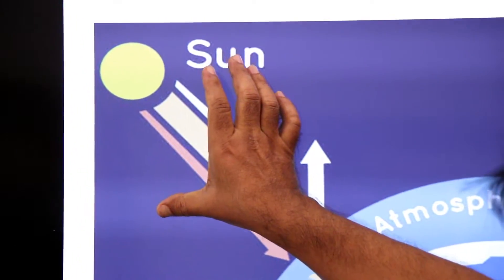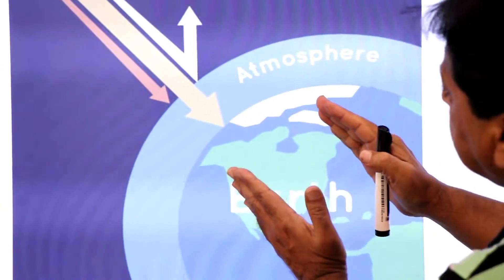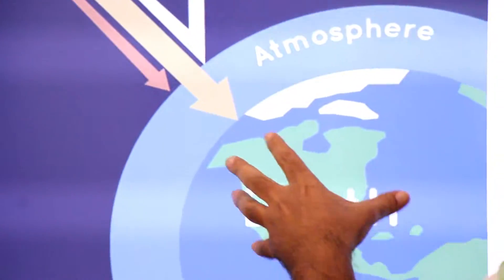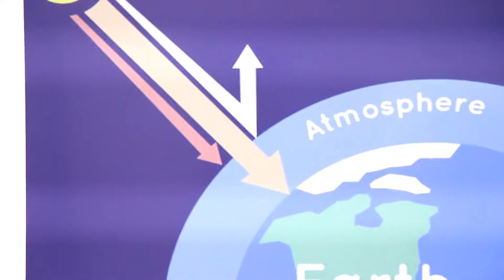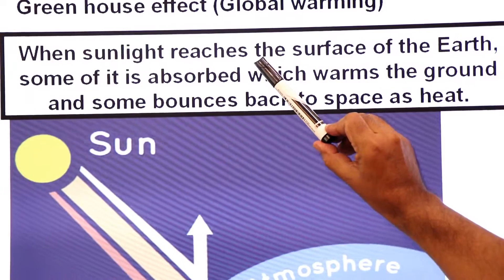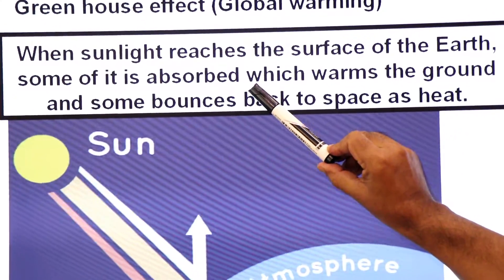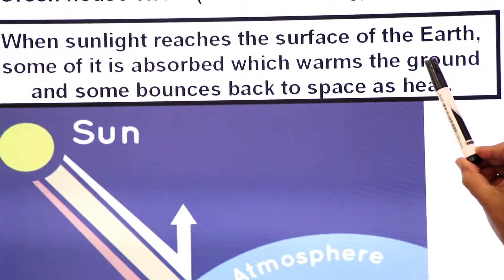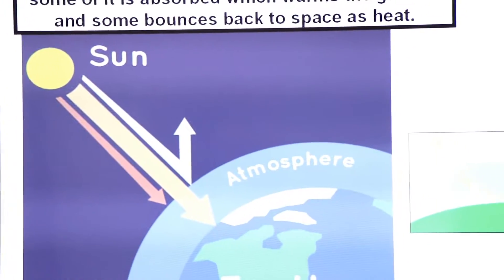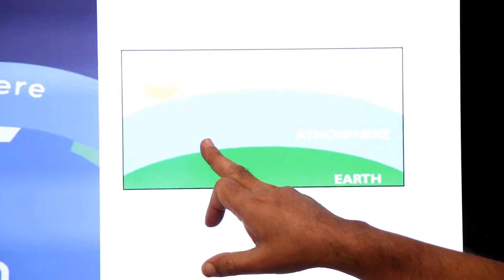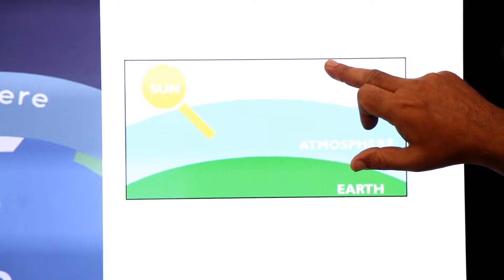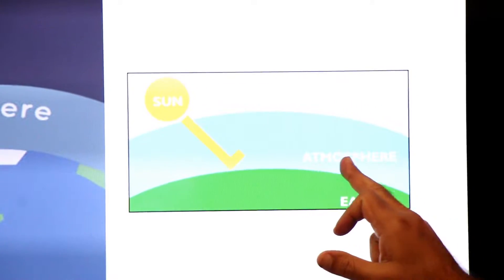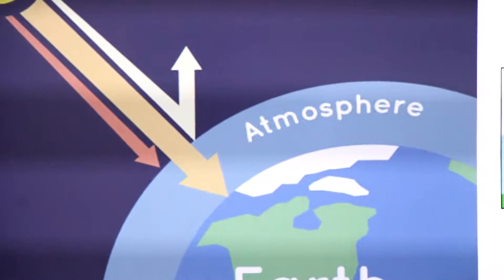Here you can see that radiation is coming from the sun. Some of the sun's heat is absorbed by the earth, and some of the heat bounces back into space. When sunlight reaches the surface of the earth, some of its heat is absorbed and warms the ground, and some bounces back to space. However, our atmosphere has certain gases called greenhouse gases.